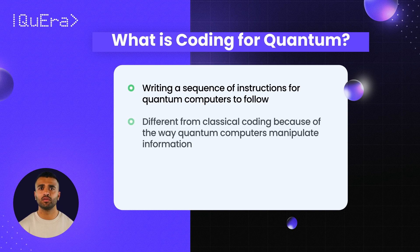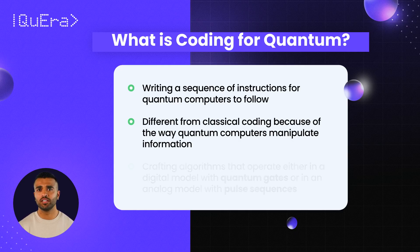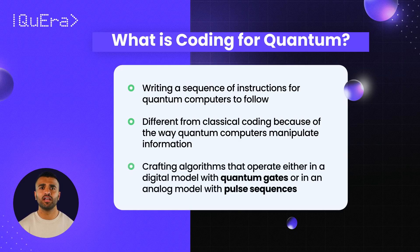While quantum coding shares some similarities with traditional programming, there are differences that stem from the way quantum computers manipulate information at a quantum level. Quantum coding involves crafting algorithms that operate either in a digital model with quantum gates or an analog model with pulse sequences.